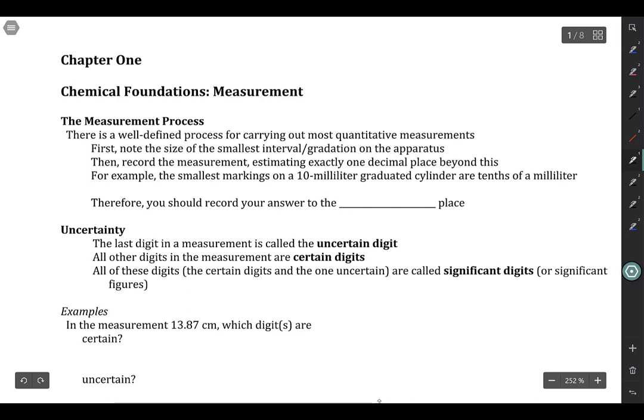Then what you do is you estimate the value of the measurement exactly one decimal place beyond that, one decimal place to the right. So in this scenario, if the smallest markings are tenths of a milliliter, you would record your measurement to the hundredths place. If the smallest markings, like on a thermometer, were to the ones place, then you would take your measurement to the tenths.